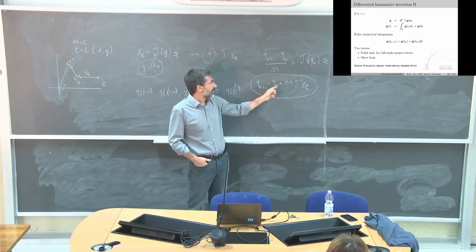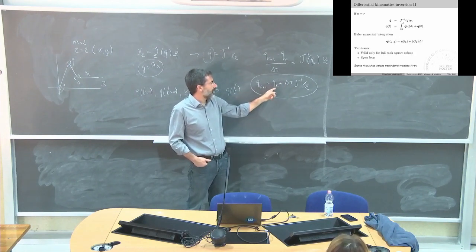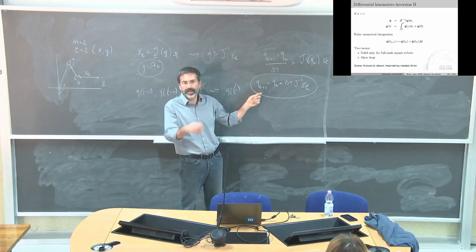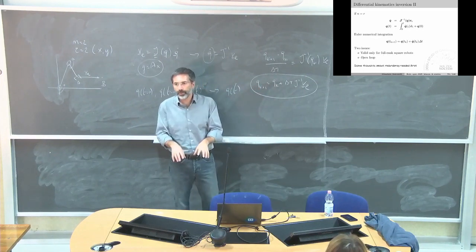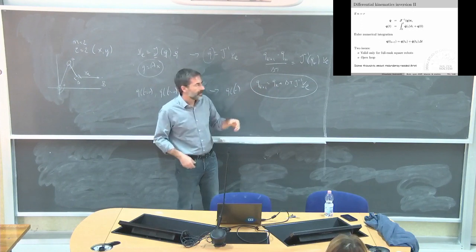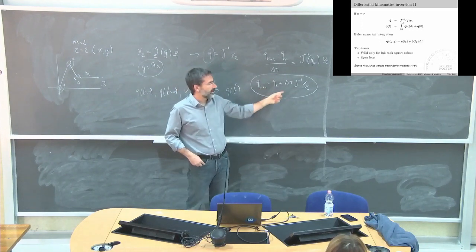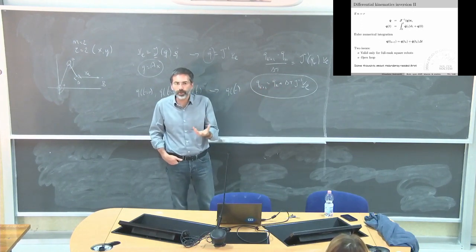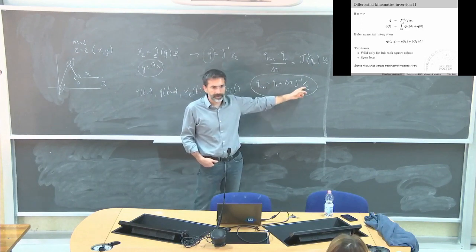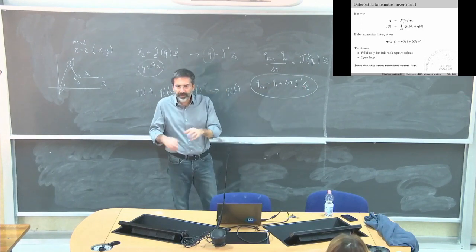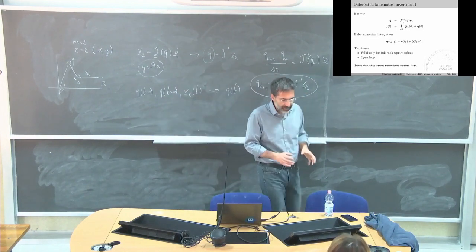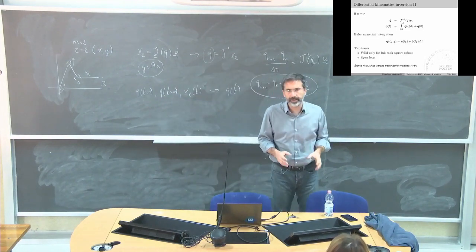By knowing the current configuration I can compute the next one, send it to the low-level controller, and doing that at each sampling time allows me to follow the desired end-effector velocity. This is a very basic concept of what is defined as kinematic control.